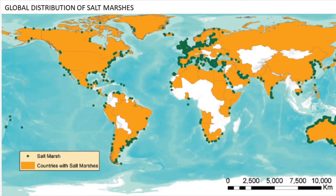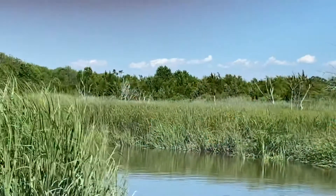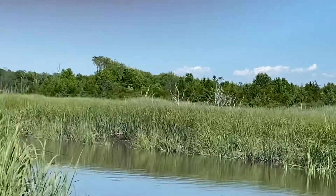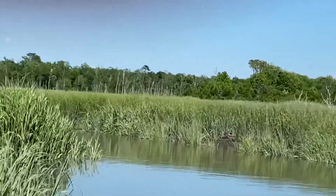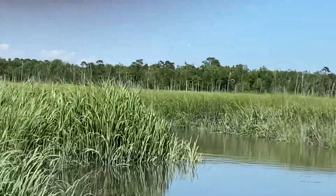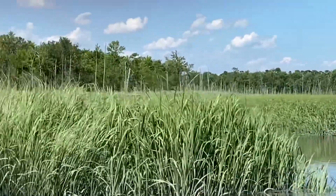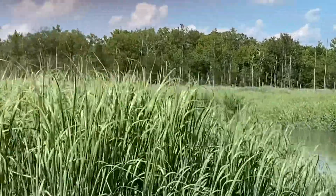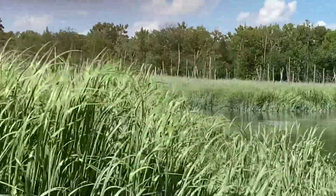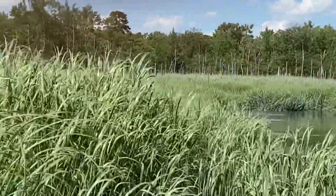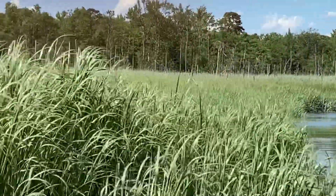The tidal salt marsh exists worldwide but particularly between the middle and the high latitudes. And the tidal salt marshes we see today, most of those started forming after the end of the last ice age about 12,000 years ago.